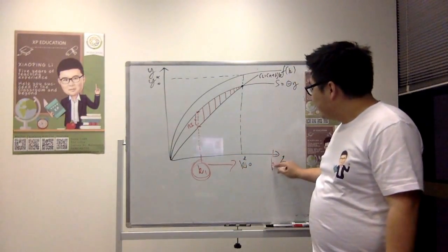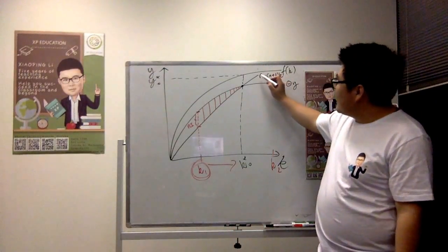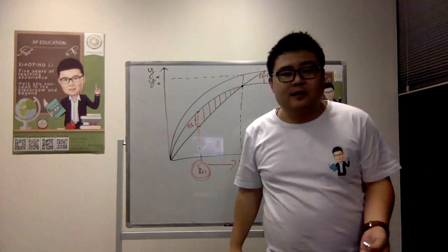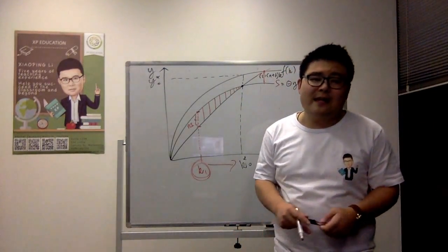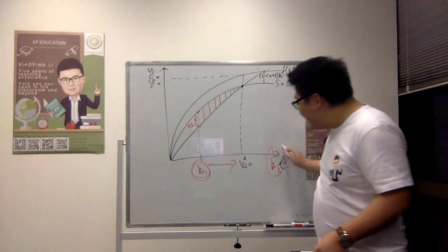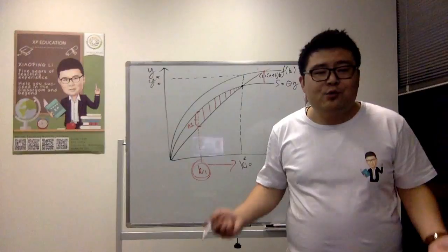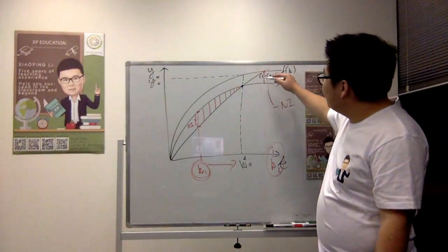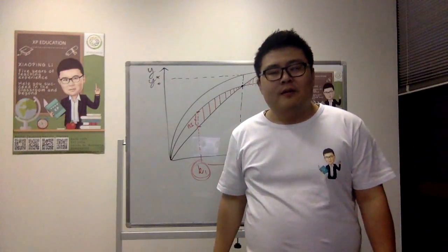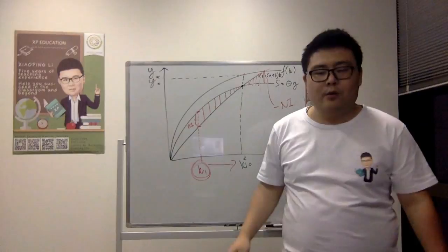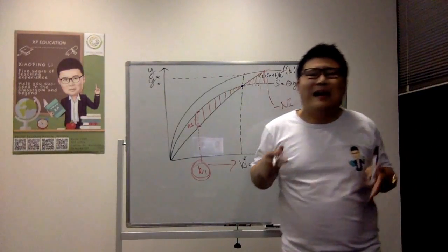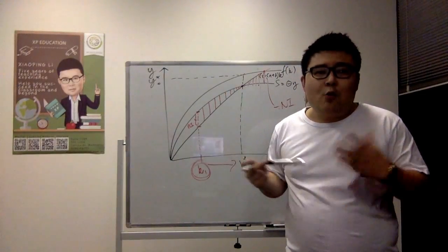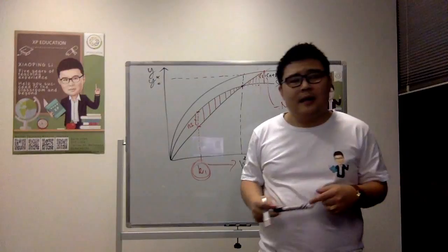What if we are at K2, above the steady state? At K2, the replacement investment curve is higher than savings. This means there is insufficient funding to retain the current level of capital per worker, resulting in negative net investment. So the economy converges back towards the steady-state level of capital per worker and output per worker.